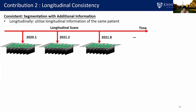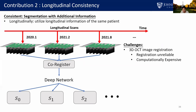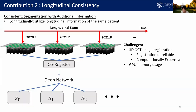For longitudinal segmentation, most existing work registers all longitudinal scans to make them spatially aligned, then uses each spatially aligned pixel as an observation through time to suppress noise. However, co-registration is challenging for OCT images — the anisotropic resolution makes interpolation unreliable, and interpolating OCT scans to be isotropic (10x upsampling in one direction) produces visible interpolation artifacts. Even after registration, training a deep network to jointly segment all scans is computationally infeasible due to huge GPU memory usage.